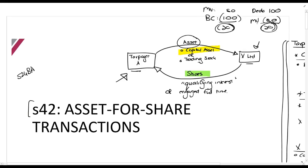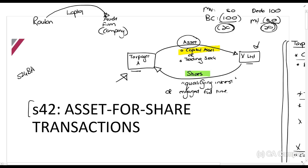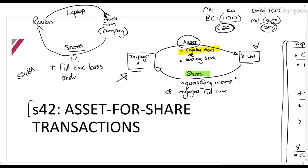For the full-time service example: imagine I want to join an audit firm as a partner. I give the firm my laptop — that's my asset — and they give me shares. I don't need to receive 10% of the shares; I could receive even 1%, as long as I am then working on a full-time basis rendering a service. This provision is for situations where someone transfers their assets into a business they're going to work in and receives some shares in return.